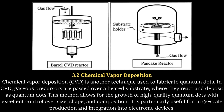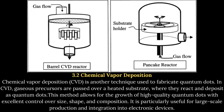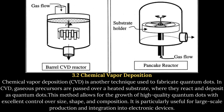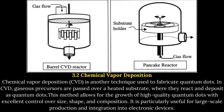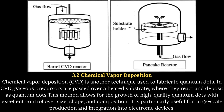3.2 Chemical Vapor Deposition. Chemical Vapor Deposition, or CVD, is another technique used to fabricate quantum dots. In CVD, gaseous precursors are passed over a heated substrate, where they react and deposit as quantum dots. This method allows for the growth of high-quality quantum dots with excellent control over size, shape, and composition. It is particularly useful for large-scale production and integration into electronic devices.